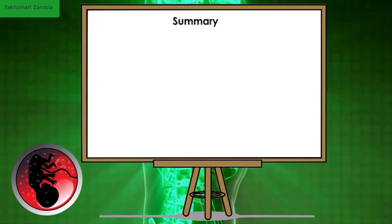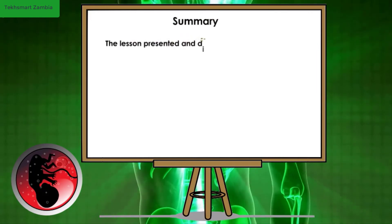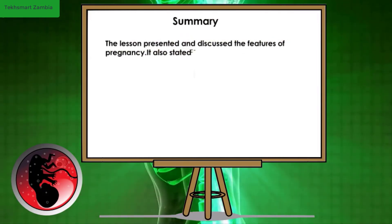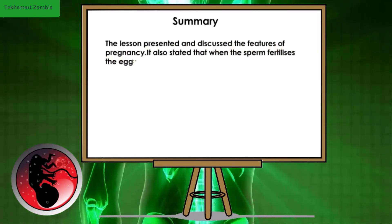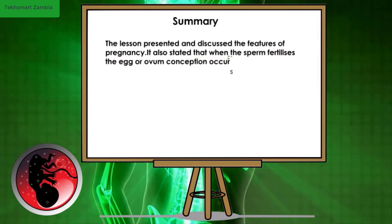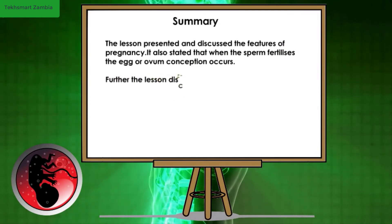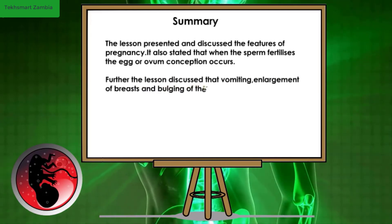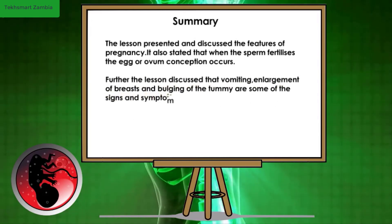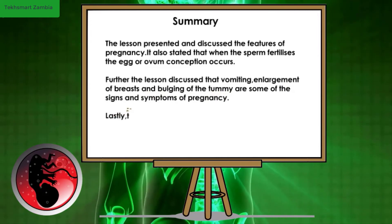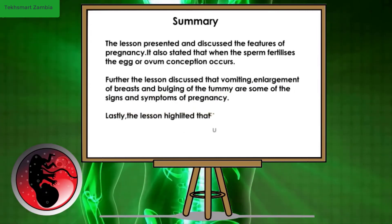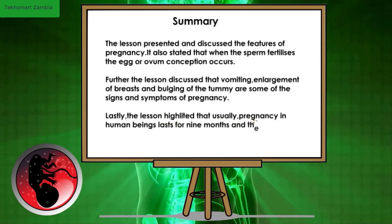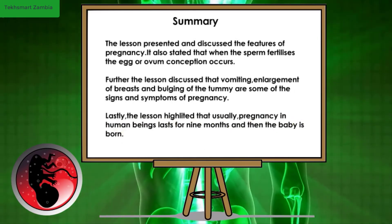Summary: The lesson presented and discussed the features of pregnancy. It also stated that when the sperm fertilizes the egg or ovum, conception occurs. Further, the lesson discussed that vomiting, enlargement of breasts, and bulging of the tummy are some of the signs and symptoms of pregnancy. Lastly, the lesson highlighted that usually, pregnancy in human beings lasts for nine months and then the baby is born.